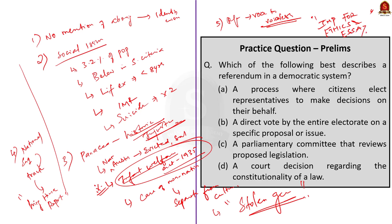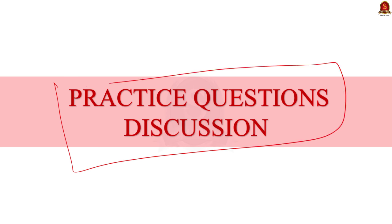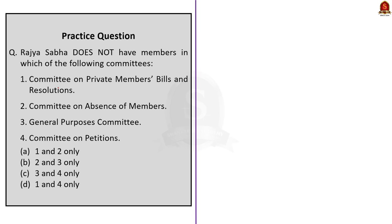Let us now discuss the preliminary practice questions. Today we have four questions. The first question asks: Rajya Sabha does not have members in which of the following committees? The answer is that Rajya Sabha does not have members in the Committee on Private Members Bill and Resolution and the Committee on the Absence of Members, but does have members in the General Purpose Committee and Committee on Petitions. After eliminating options three and four, the correct answer is option A.